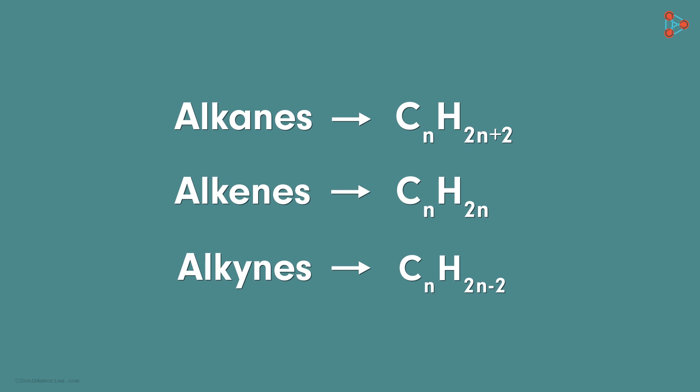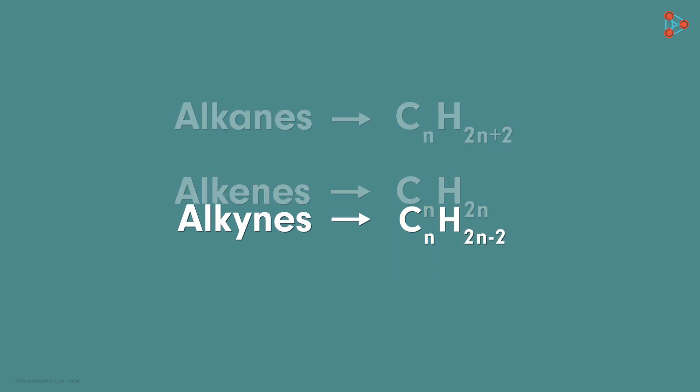Looking at the formulas, we can tell that for the same number of carbon atoms, alkynes will have fewer hydrogen atoms compared to alkanes and alkenes.